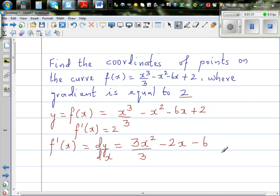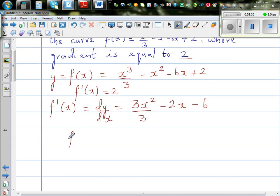minus 2x minus 6. And this is 0, the gradient of this is 0. So we can say f dash x is equal to, so 3 and 3 gets cancelled, you've got x squared minus 2x minus 6.